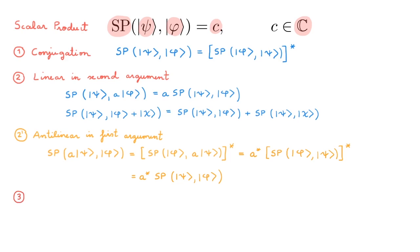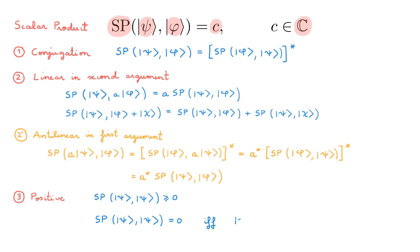The final property, positivity, is easier to carry through from a real to complex vector space. The scalar product of a ket with itself is a real number that is greater or equal to zero, and it equals zero if and only if we have the null ket. So the scalar product in state space is quite similar to the scalar product in Euclidean space, with the main difference arising because we have a complex vector space.